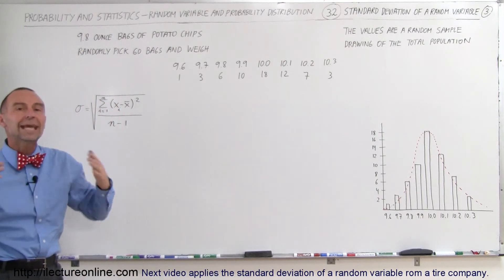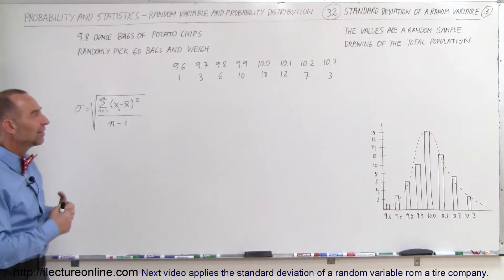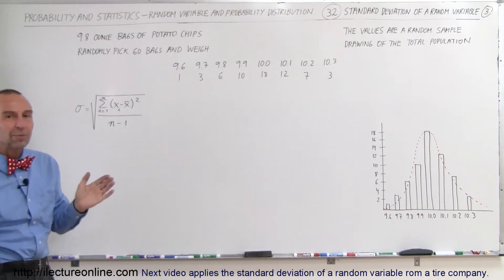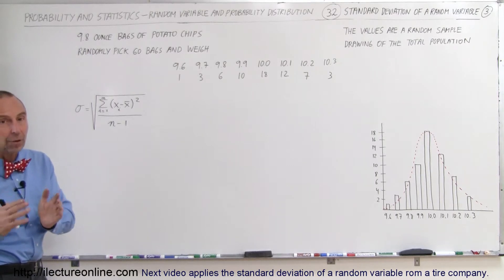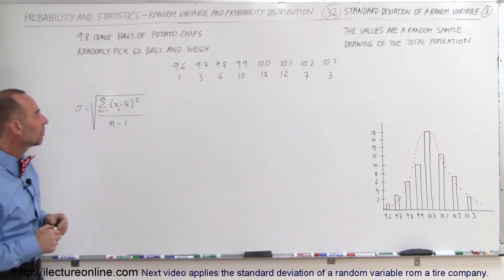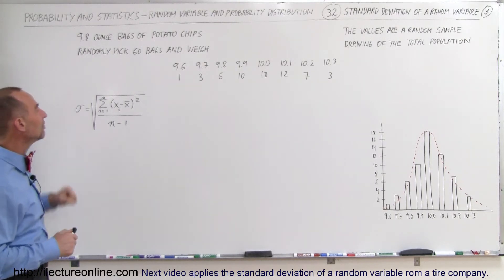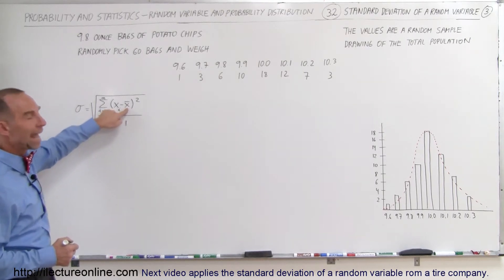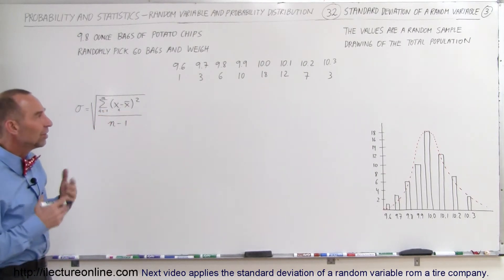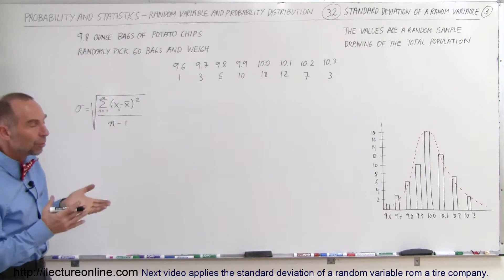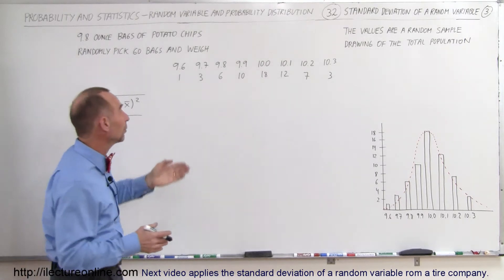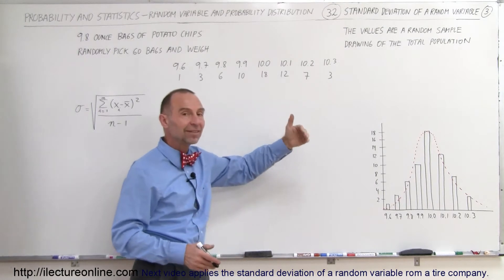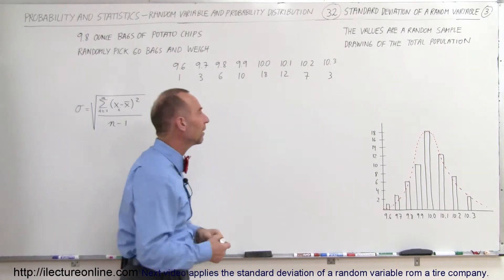What is the variation, and is that good, or do we want to change the process to tighten up our variation a little bit more? To calculate the standard deviation we first need to find the average value. Since each number has an equal probability of occurring, we need to take all 60 values, add them up, and divide by 60.